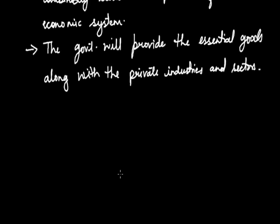So now when the economic system was decided, our next step was to come up with a plan where we could use this mixed economic system and generate the best possible results. The next level will introduce the five-year plan that became the backbone of the economic development of our country. We will study them in the next lecture. Thank you so much.